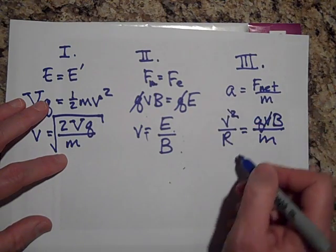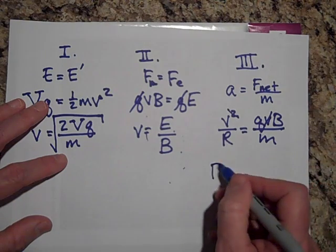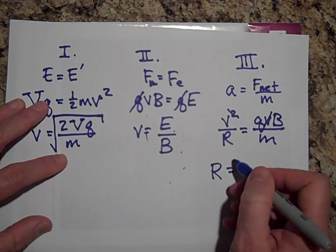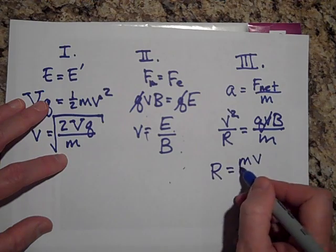I can get rid of one of the V's and I can solve for r. R will equal mV over qB.